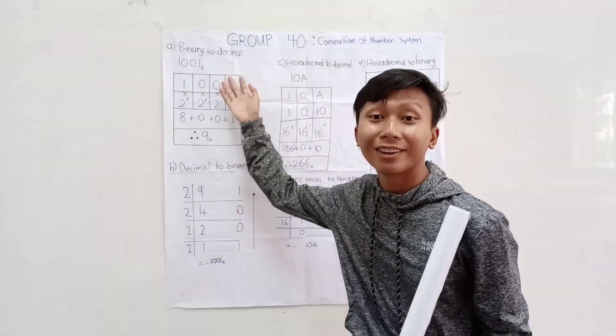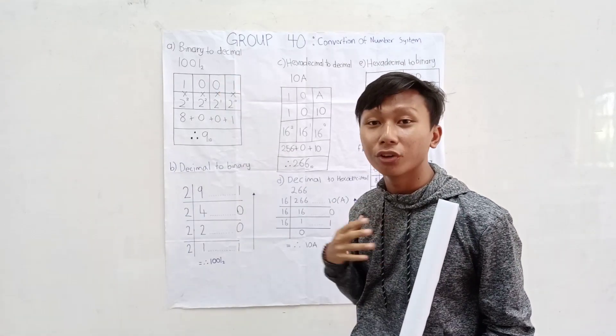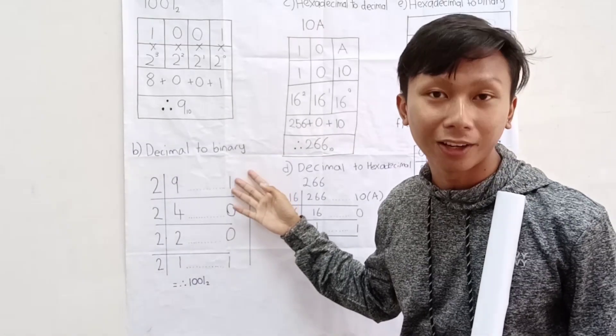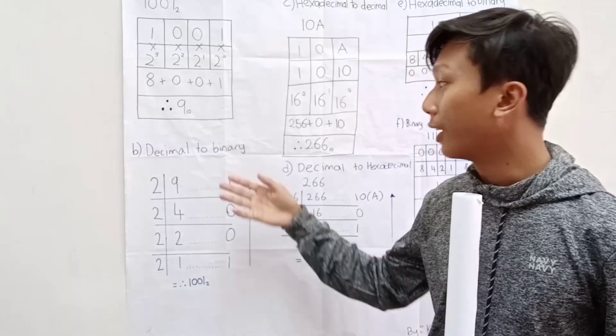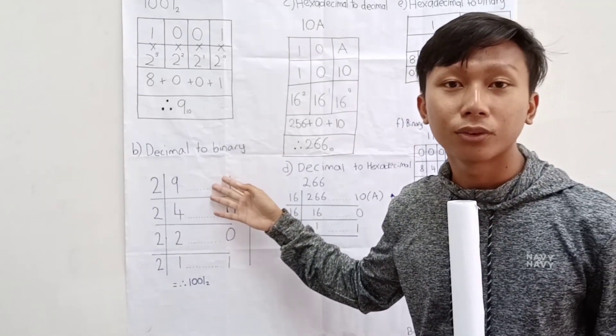Hi, okay, we already know how to convert binary to decimal. Now, I'm going to show you how to convert decimal to binary. Let's say we have our decimal number, which is 9. So, we're going to convert it to binary.